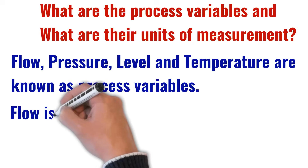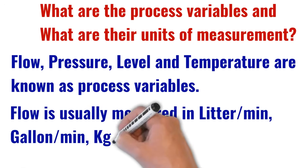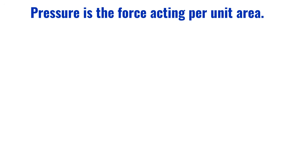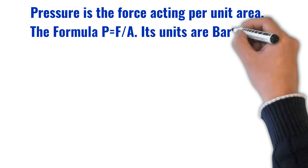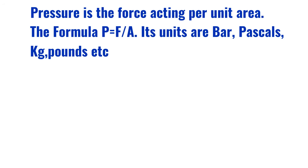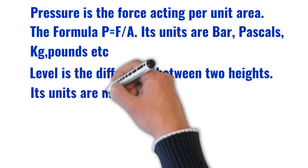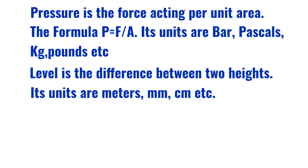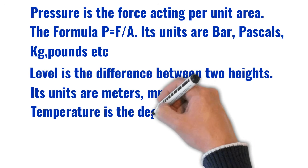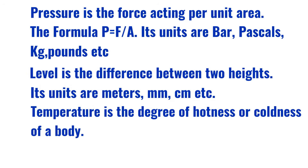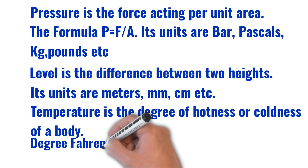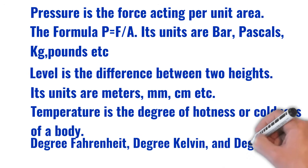Flow is usually measured in liters per minute, gallons per minute, kg per hour, etc. Pressure is the force acting per unit area, and it is usually measured in bar, pascals, kg, pounds, etc. Level is the difference between two heights, and its units are meters, millimeters, and centimeters, etc. Lastly, temperature is the degree of hotness or coldness of a body, and its units are degree Centigrade, degree Fahrenheit, degree Kelvin, and degree Rankine.